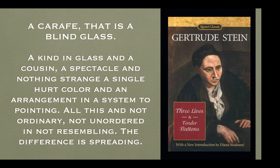In an interview for the Transatlantic in 1946 with Robert Bartlett Haas, Stein reflected back on these days of experimentation, saying: 'I used to take objects on a table, like a tumbler or any kind of object, and try to get the picture of it clear and separate in my mind and create a word relationship between the word and the things seen.' Here are a couple of examples of perhaps more accessible poetry from members of the Lost Generation, attempting to convey the fourth and fifth dimension in their work by creating sensations through powerful imagery.